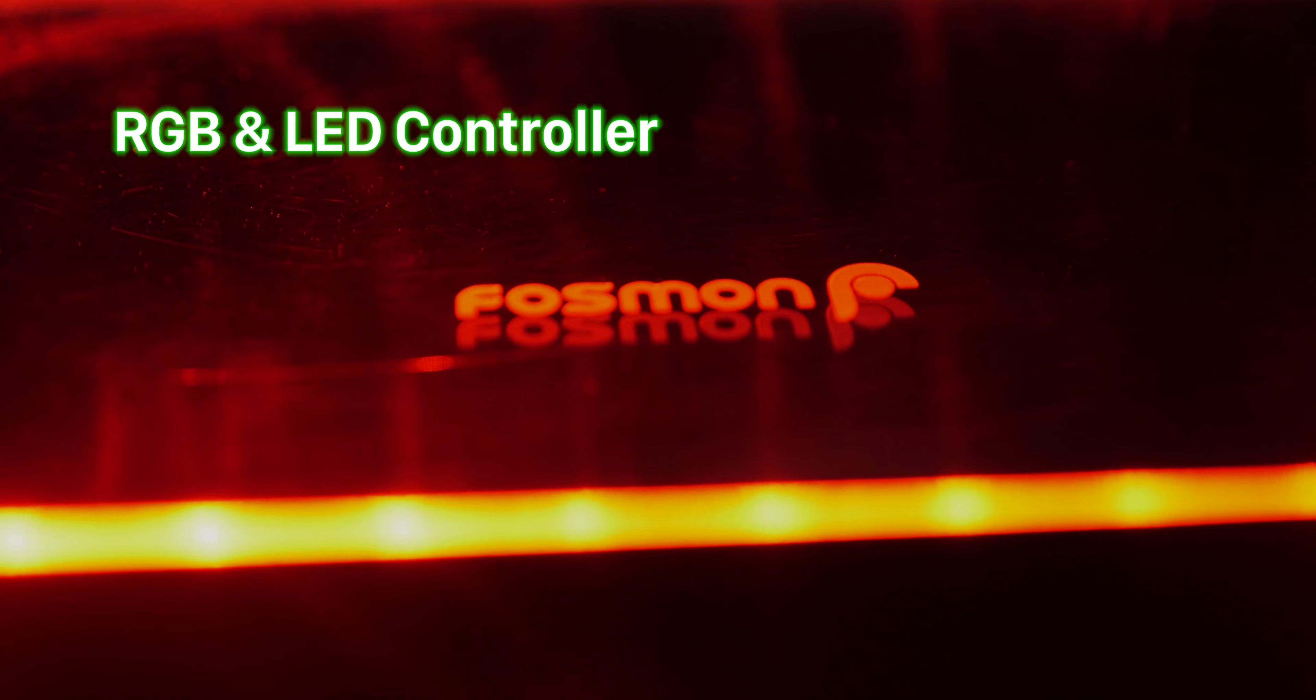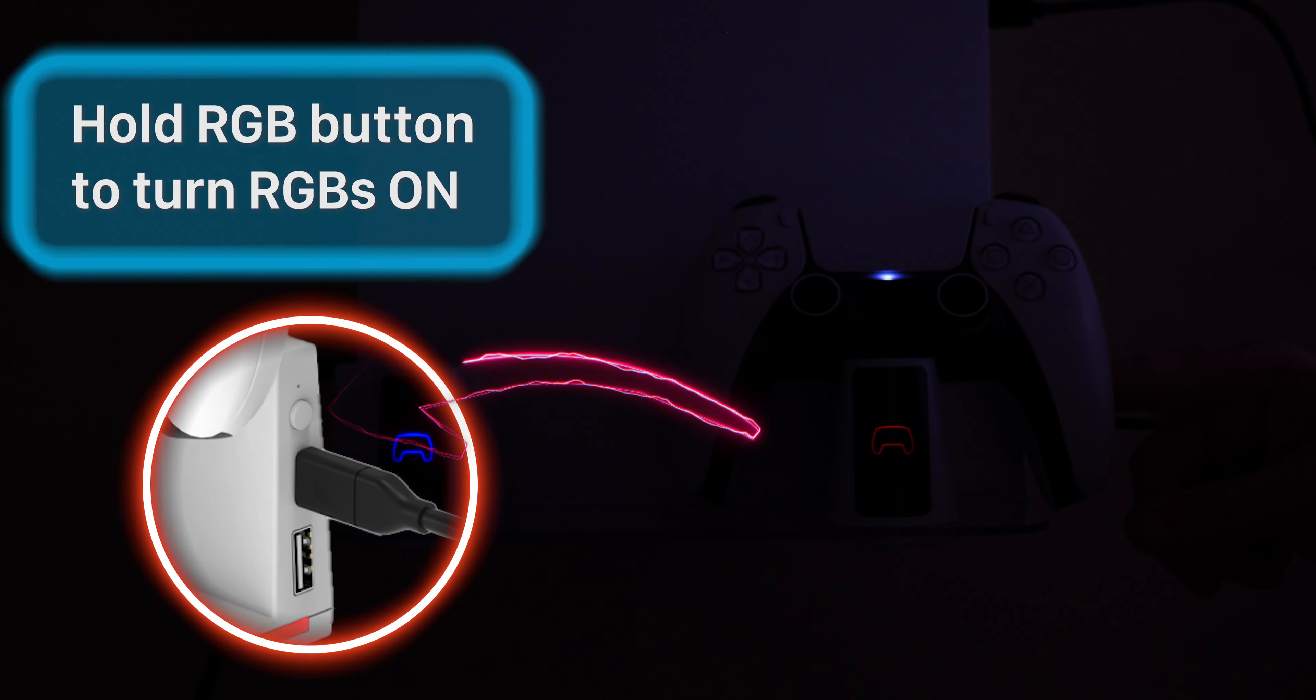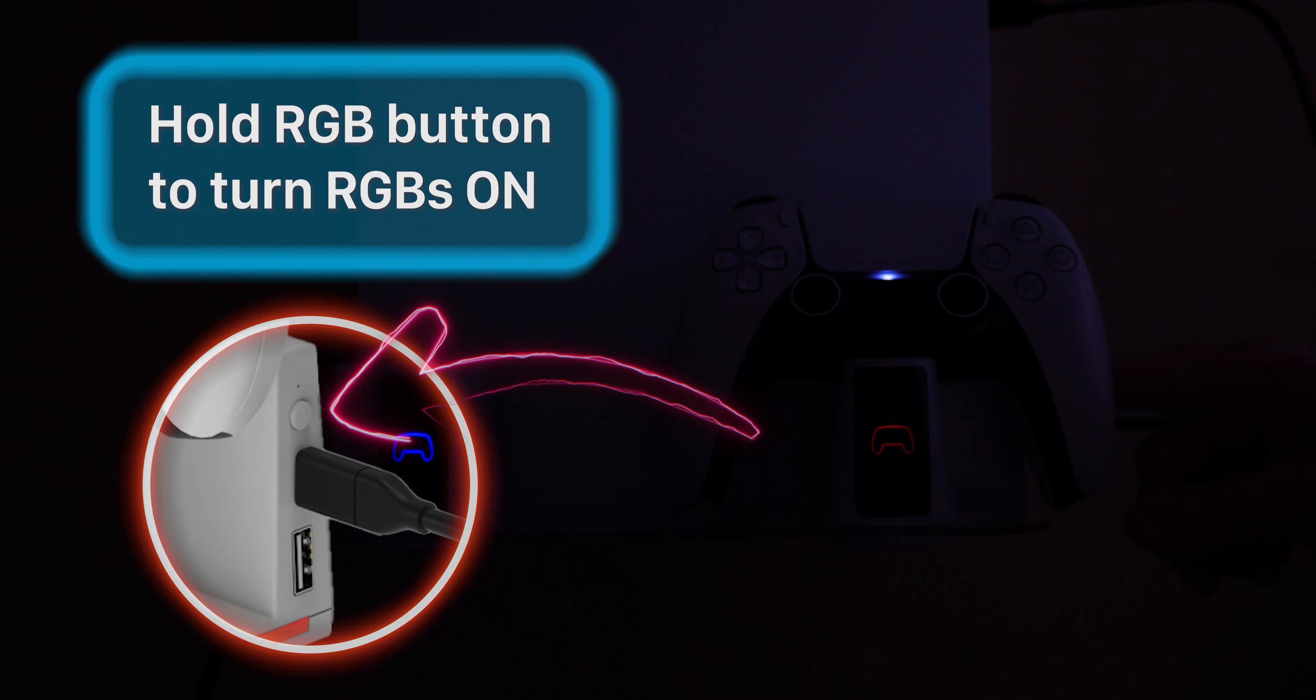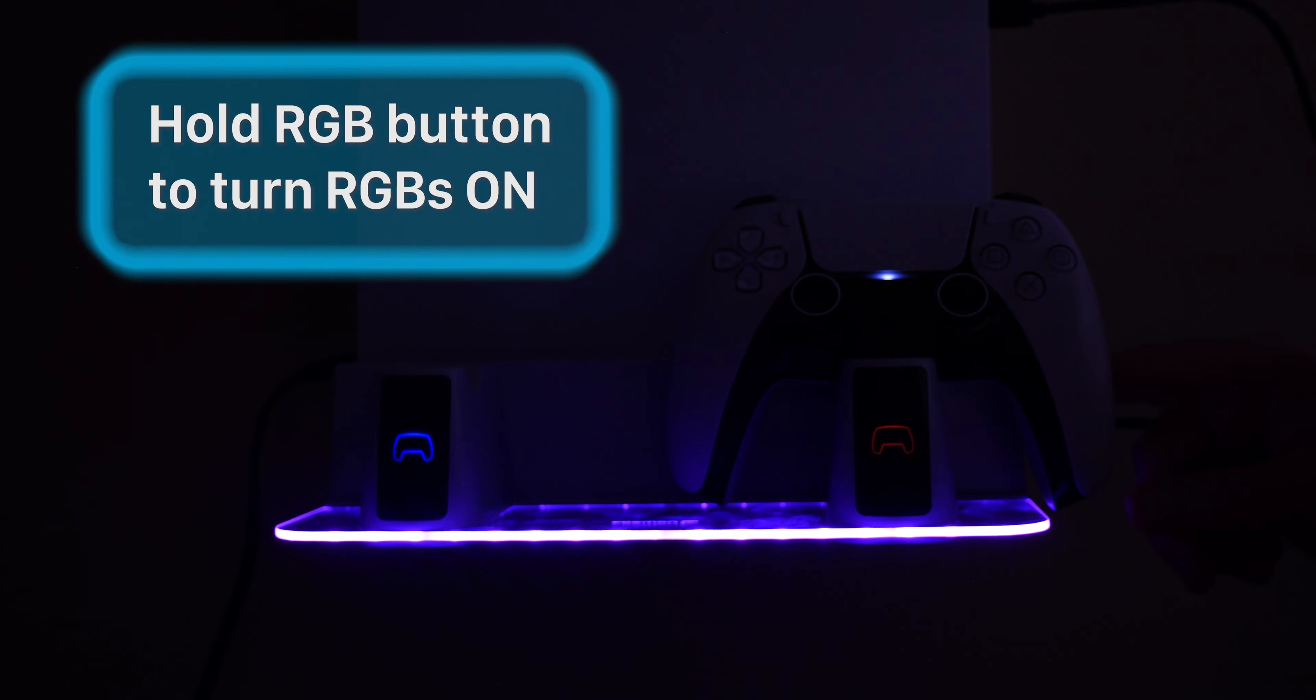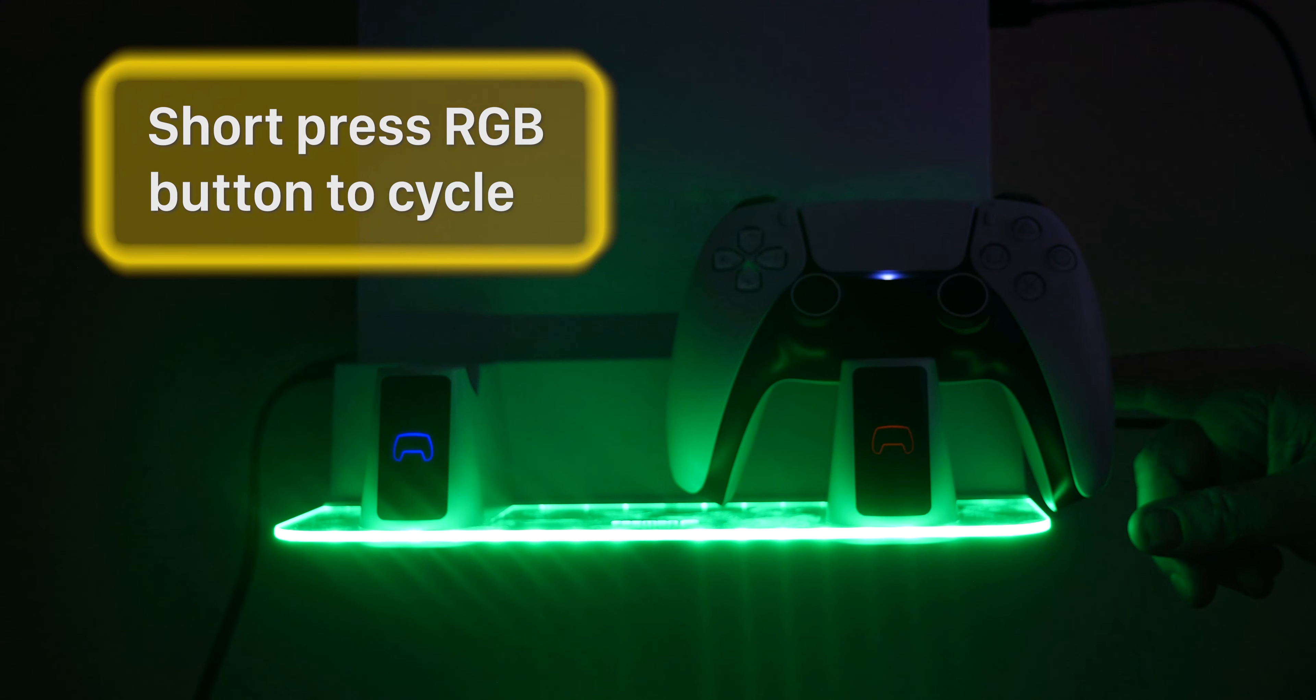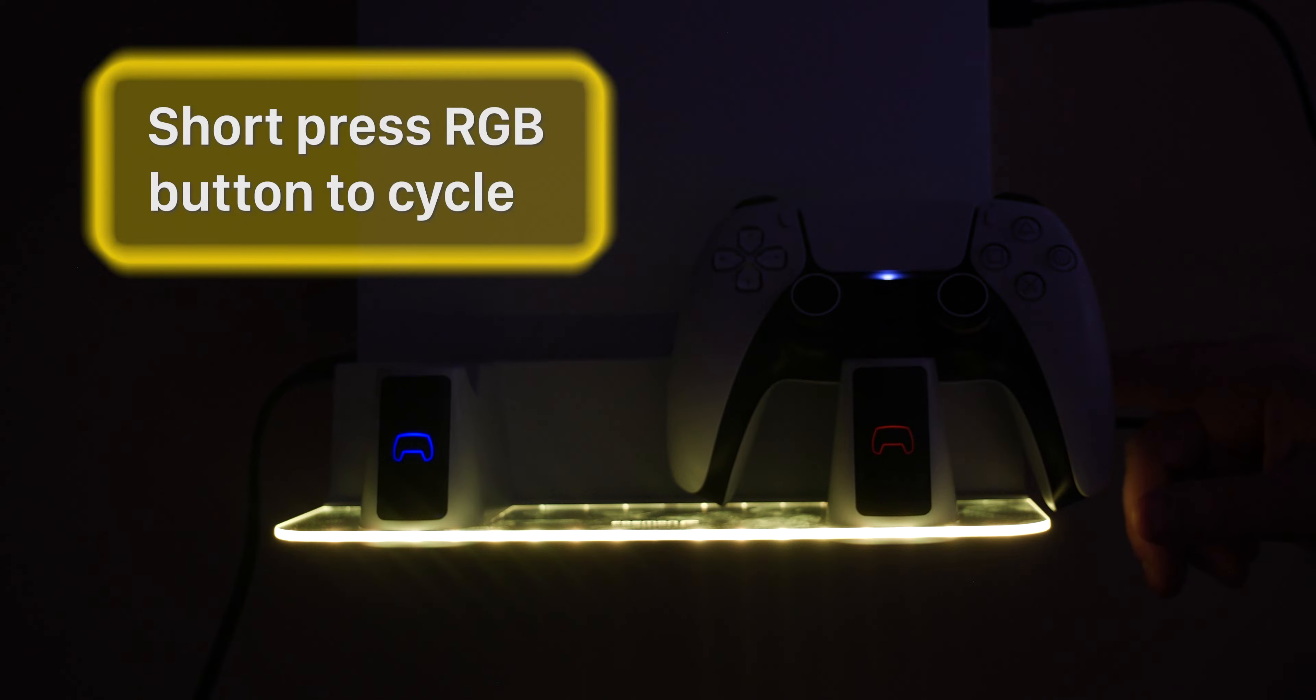RGB LED controller. Hold the RGB button down for three seconds to turn the RGB LEDs on or off. Short press the RGB button to cycle through the various RGB color configurations.